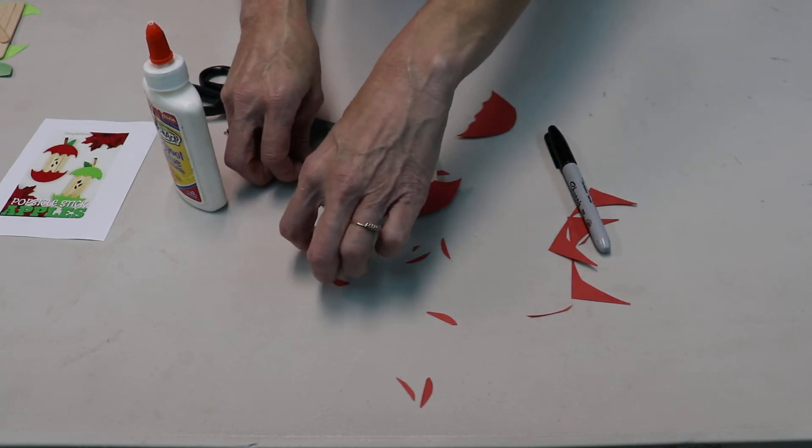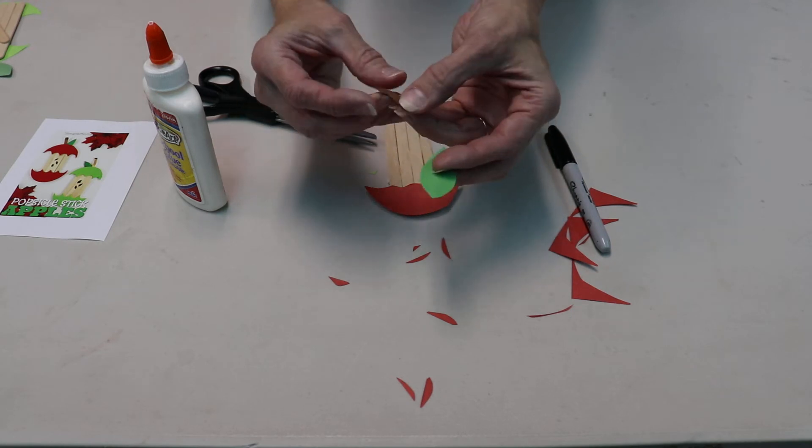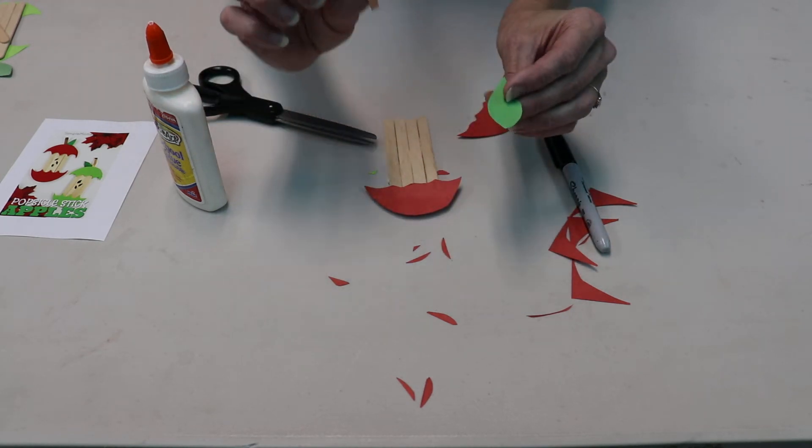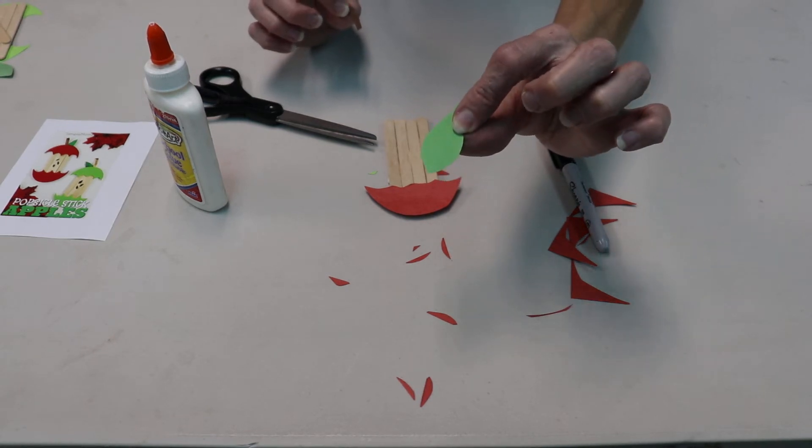Now for the top, you're gonna have a piece of green paper and a piece of brown paper. You'll just take the brown paper and you'll cut it in the shape of a stem, the green paper, and put it in the shape of a leaf.